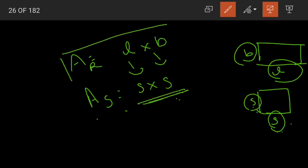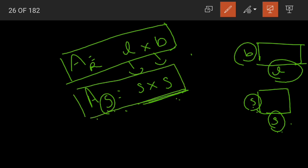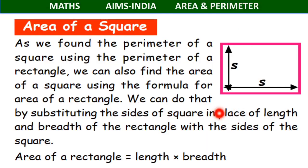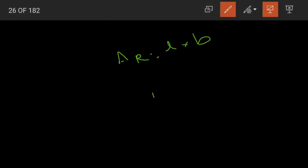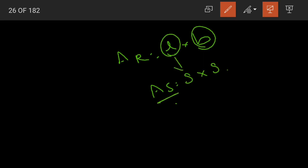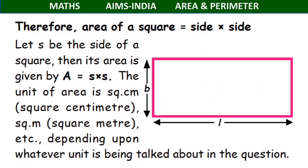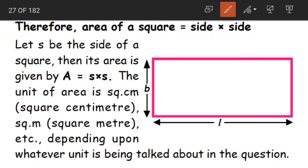Area of rectangle is length into breadth. For a square, all lengths and breadths are equal, so area of a square is equal to side into side. We simply substituted: instead of L we write S, and instead of B we write S. Therefore, area of a square equals side into side.